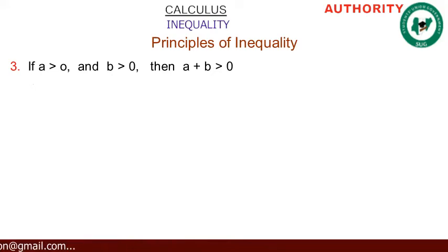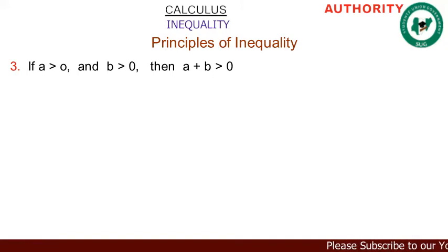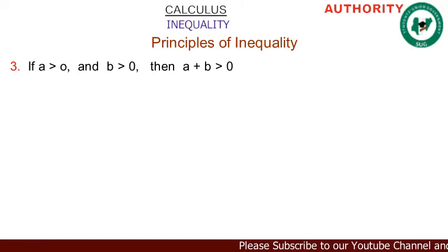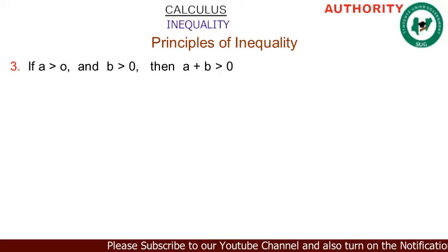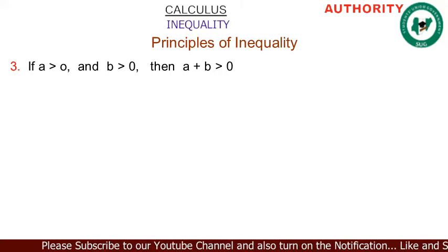Principle three: if a > 0 and b > 0, then a + b > 0. When both a and b are greater than zero, their sum must also be greater than zero.